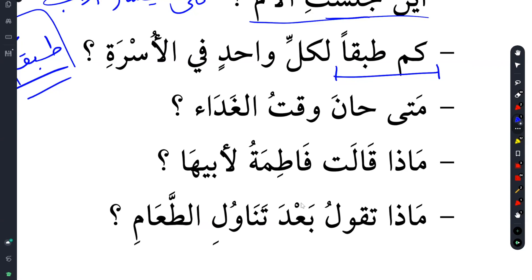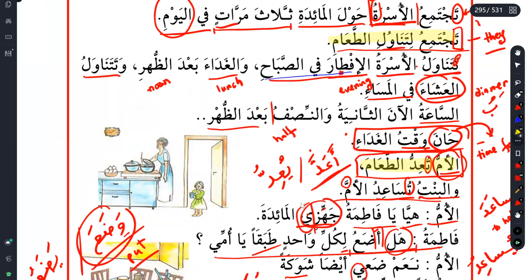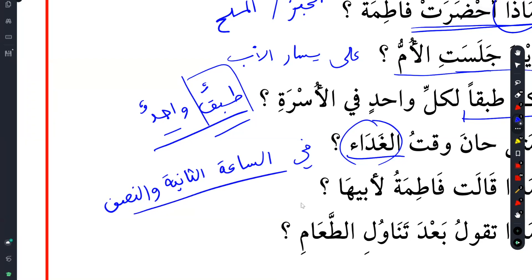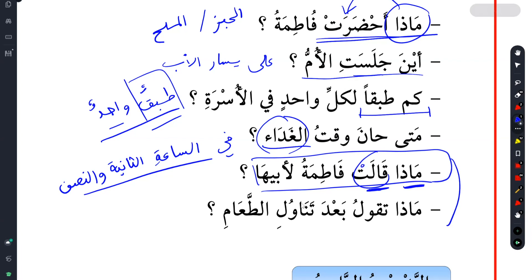Mata hana waqtu al-ghada? We talked about hana - when is the time for lunch? The answer is fi as-sa'ati wa-nis - at 12:30. Mata qalat Fatima tu li-abiha? What did Fatima say to her father? When you say mata - what did she say? And why we're saying she? Because the verb. Please get used to mata and how to use it with the verbs.